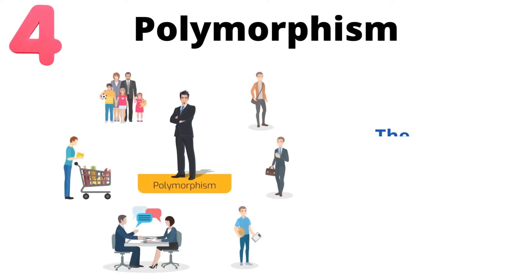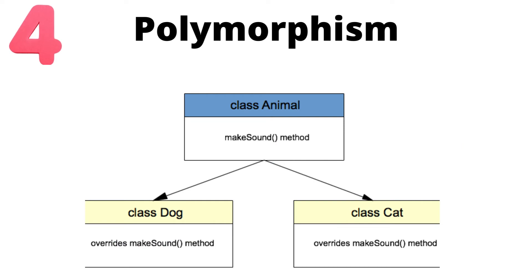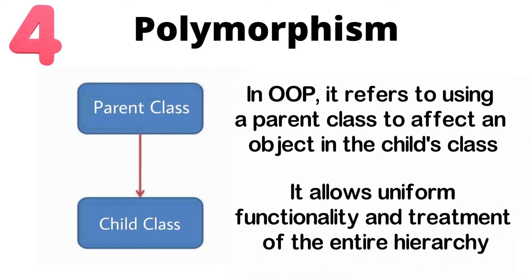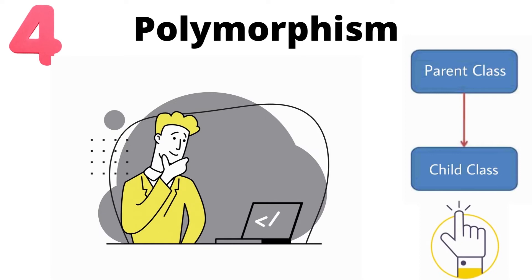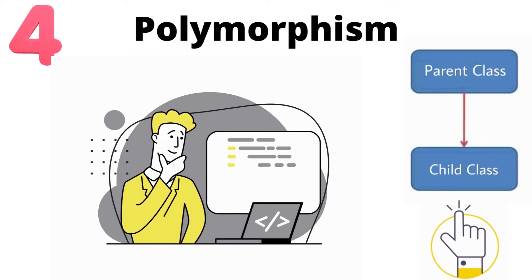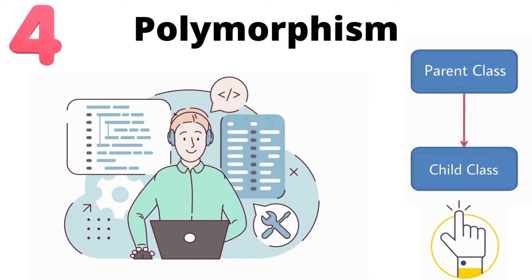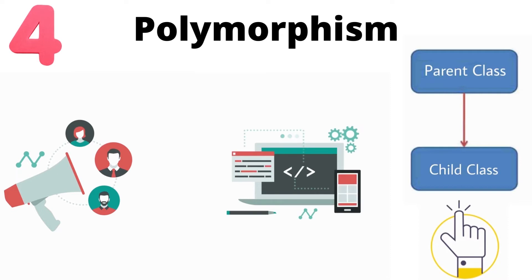4. Polymorphism. The word polymorphism means many or different behaviors. In OOP, it refers to using a parent class to affect an object in the child's class. It allows uniform functionality and treatment of the entire hierarchy. Polymorphism requires code that can handle objects from the root of the hierarchy. Any object instantiated by a child class is handled the same way, thus offering uniform treatment. Since child classes have the same interface and functions as their parents, the calling code can call any single or multiple function. Depending on the type of the object passed, the right function will be called at runtime.